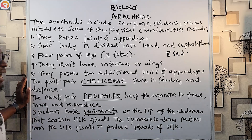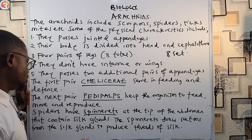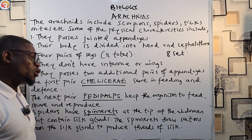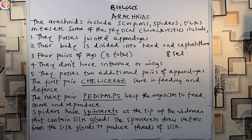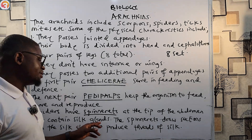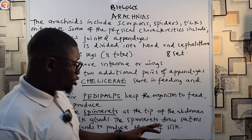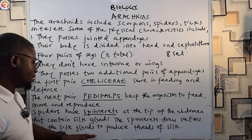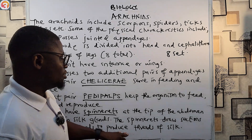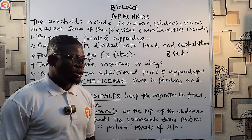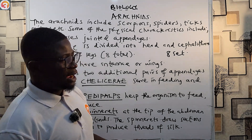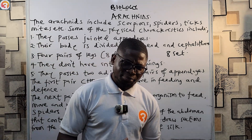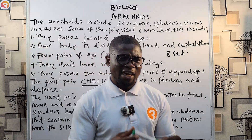Spiders have spinnerets at the tip of their abdomen that contain silk glands. These spinnerets draw secretions from the silk glands to produce threads of silk. Now I'm going to go to the O3 Schools Jam app to answer questions on the phylum Arthropoda.